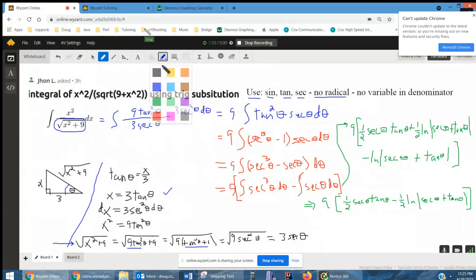If you cancel out some of the common factors, I can see these cancel out. One of the secants cancels out. So I get 9 tangent squared theta secant theta d theta.